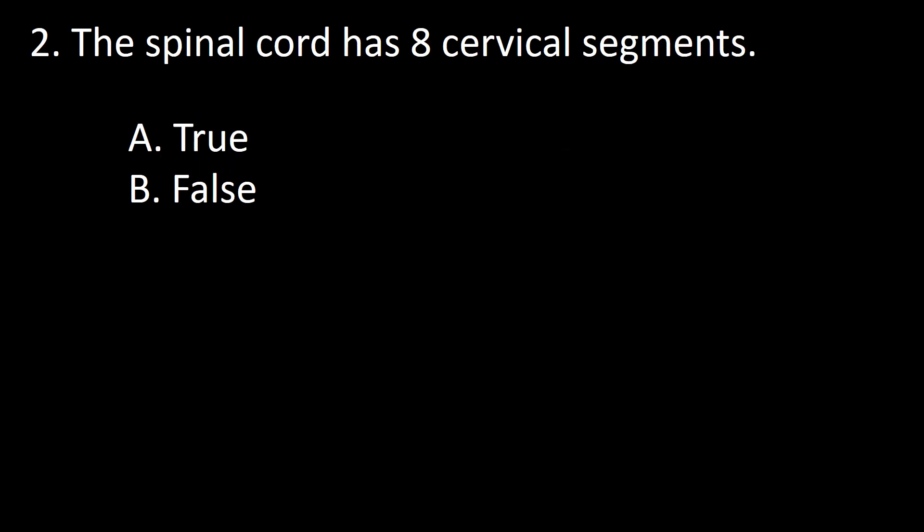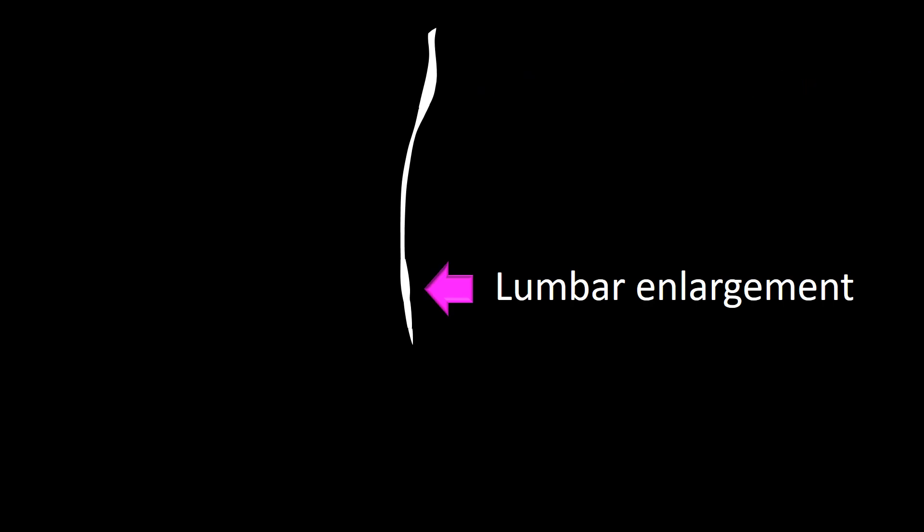Next question: the spinal cord has eight cervical segments — true or false? The spine is a tubular structure with no apparent physical segmentation, but it has two enlargements. One corresponds to the C4 to T1 spinal segment, called cervical enlargement, and another one below called lumbar enlargement, which goes from L2 to S3. These enlargements correspond to the spinal cord regions that innervate the limbs.